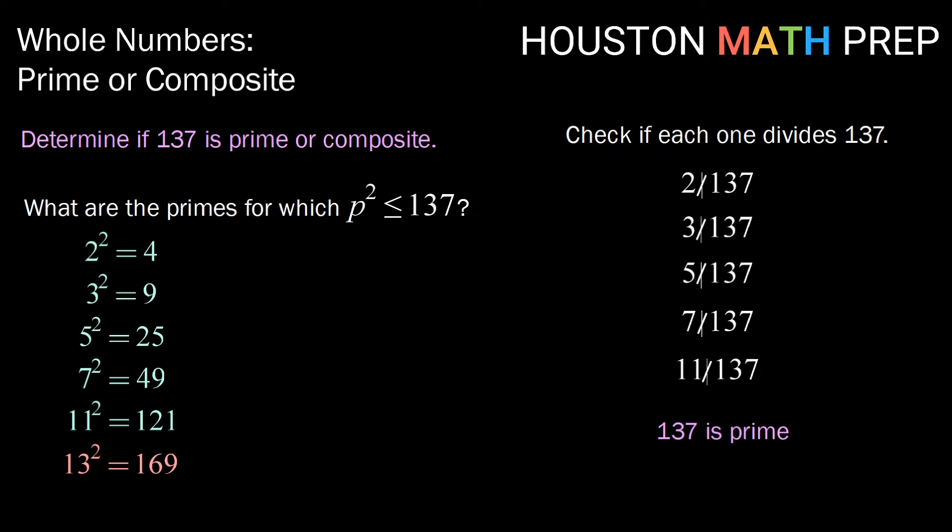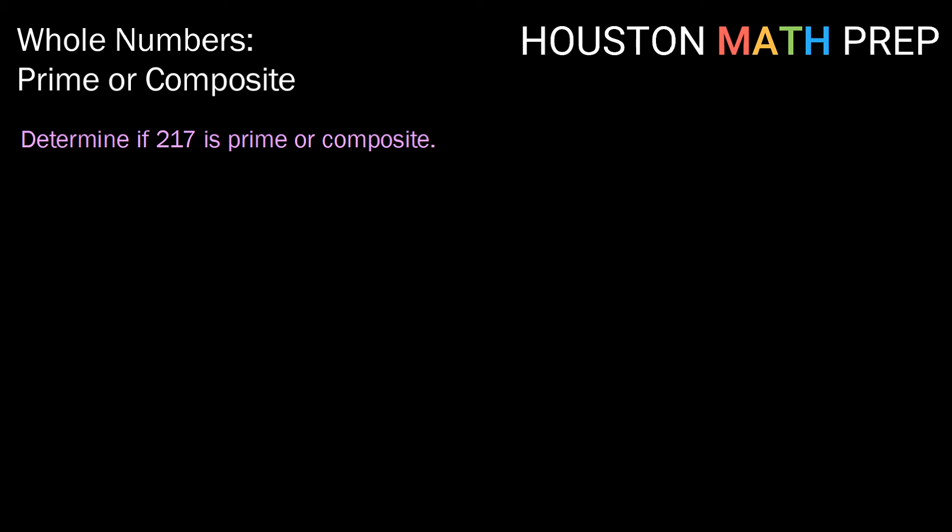All right, so let's try that one more time. Now we want to check out the number 217. We're going to start exactly the same way by asking what are the primes for which p squared is less than or equal to 217.